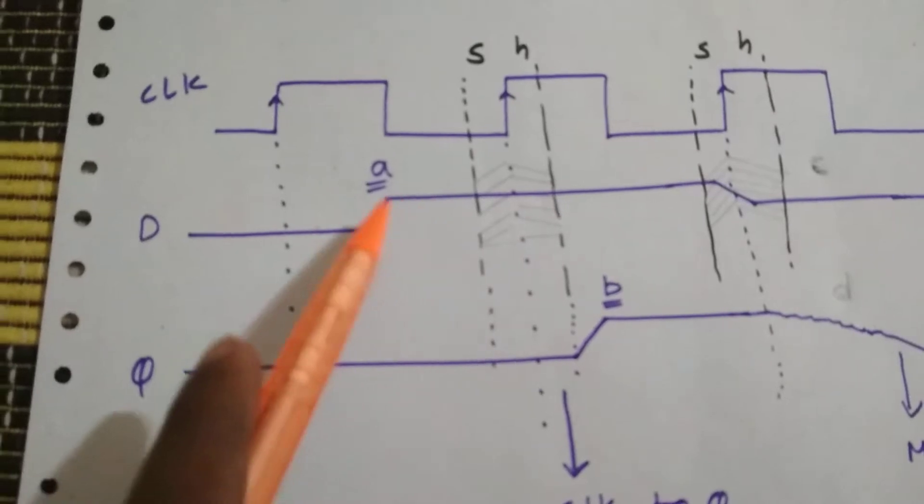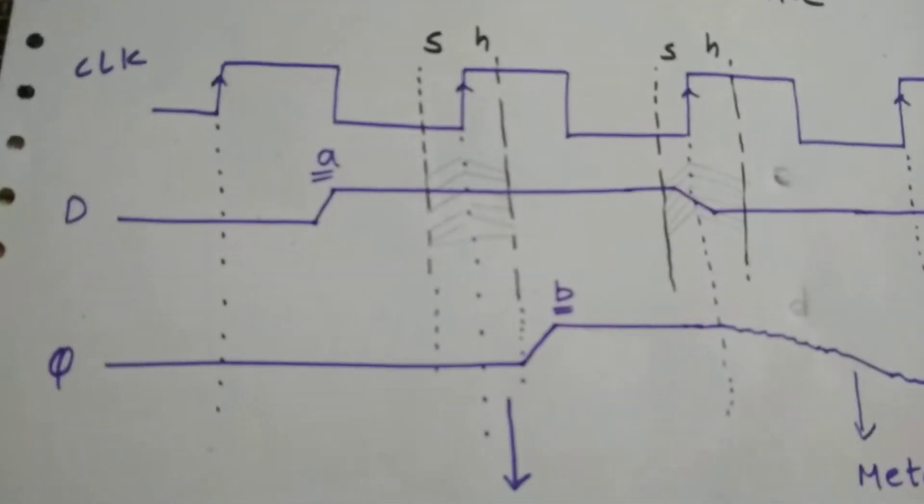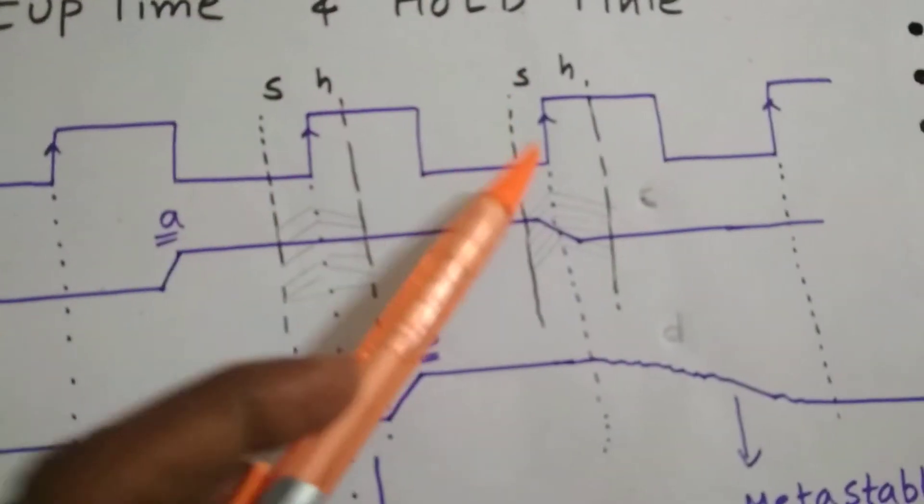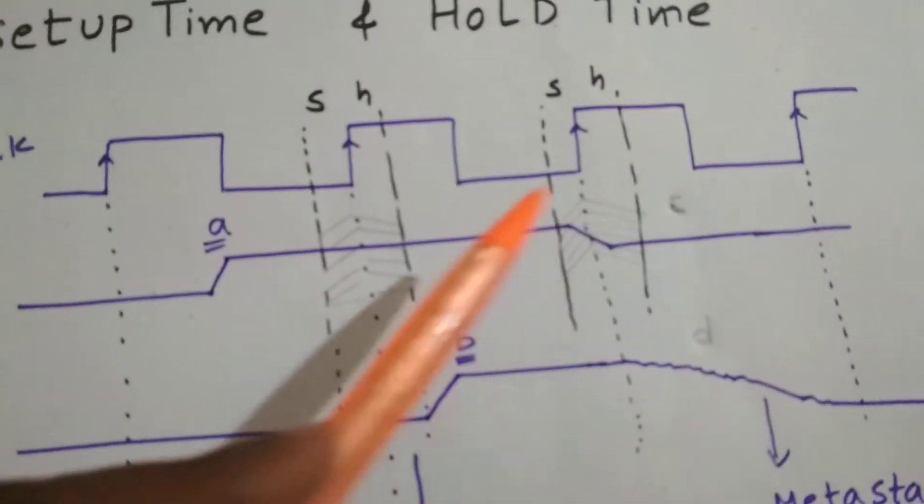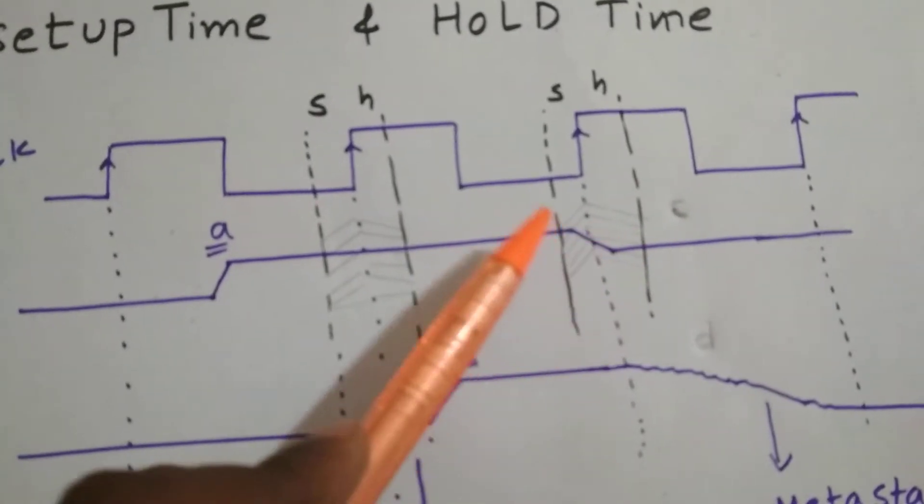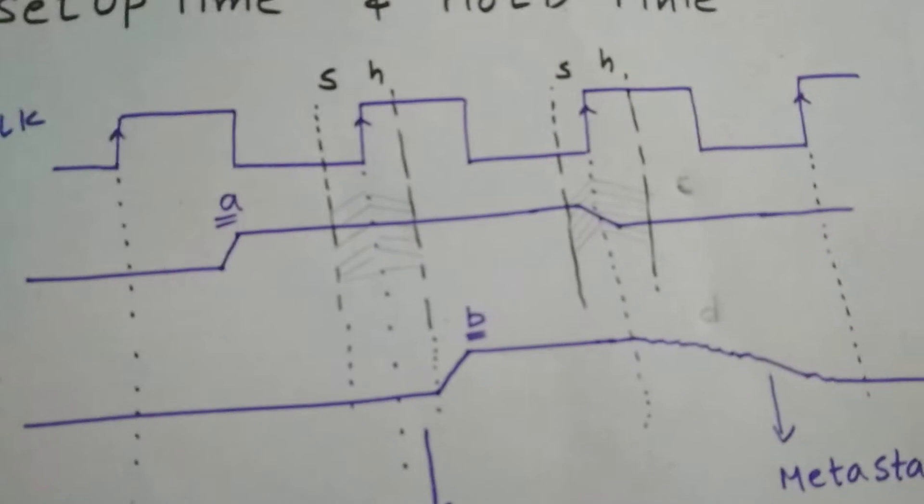At A, the output is B. So let's check out what happens when it changes in setup time. Here we have a condition C where the input is changed from 1 to 0 in setup time. So what does it result?